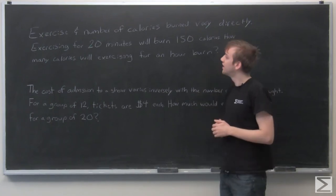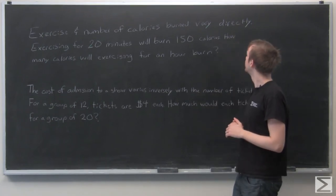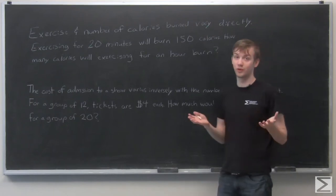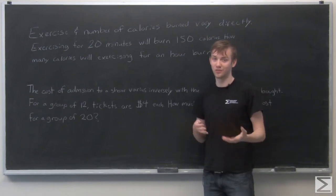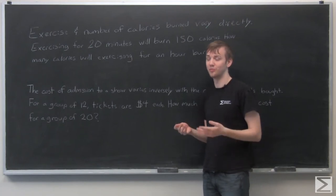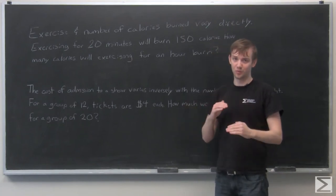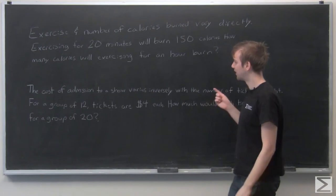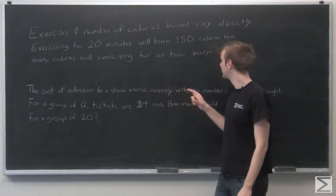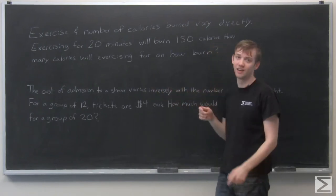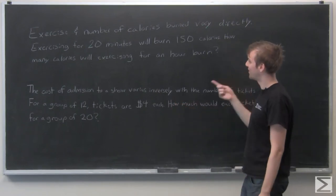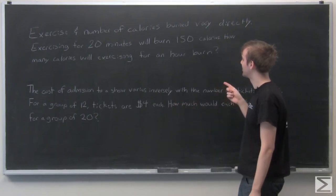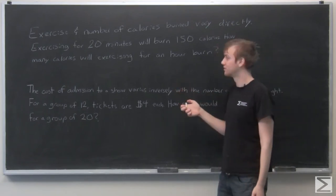So this first one says, exercise and number of calories burned vary directly. So we're dealing with direct variation. Usually when you're dealing with direct or inverse variation, it'll state explicitly in the problem. They'll say they're directly proportional or something like that. Exercising for 20 minutes will burn 150 calories. I made that number up, it might not actually be that. But how many calories will exercising for an hour burn? So an hour is 60 minutes.